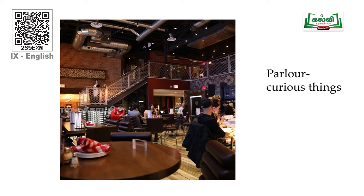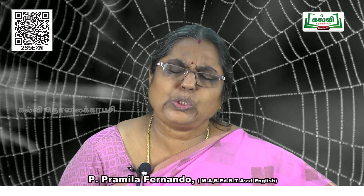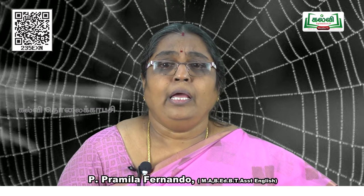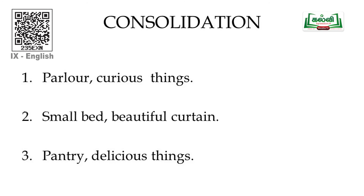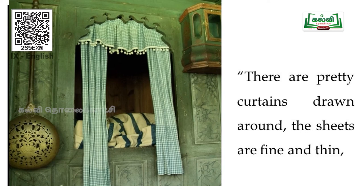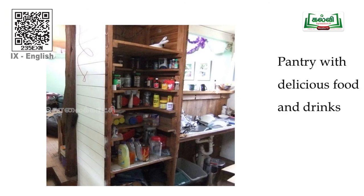In the second stanza, the spider is more concerned about the fly, telling it that it must be so tired. So come to my house, come to my web. I will give you a small bed to rest upon, surrounded with beautiful curtains, and fine and thin sheets. In the third stanza, the spider is offering the pantry, where there are delicious food and drinks. If the fly comes into the pantry, it can taste the delicious food.